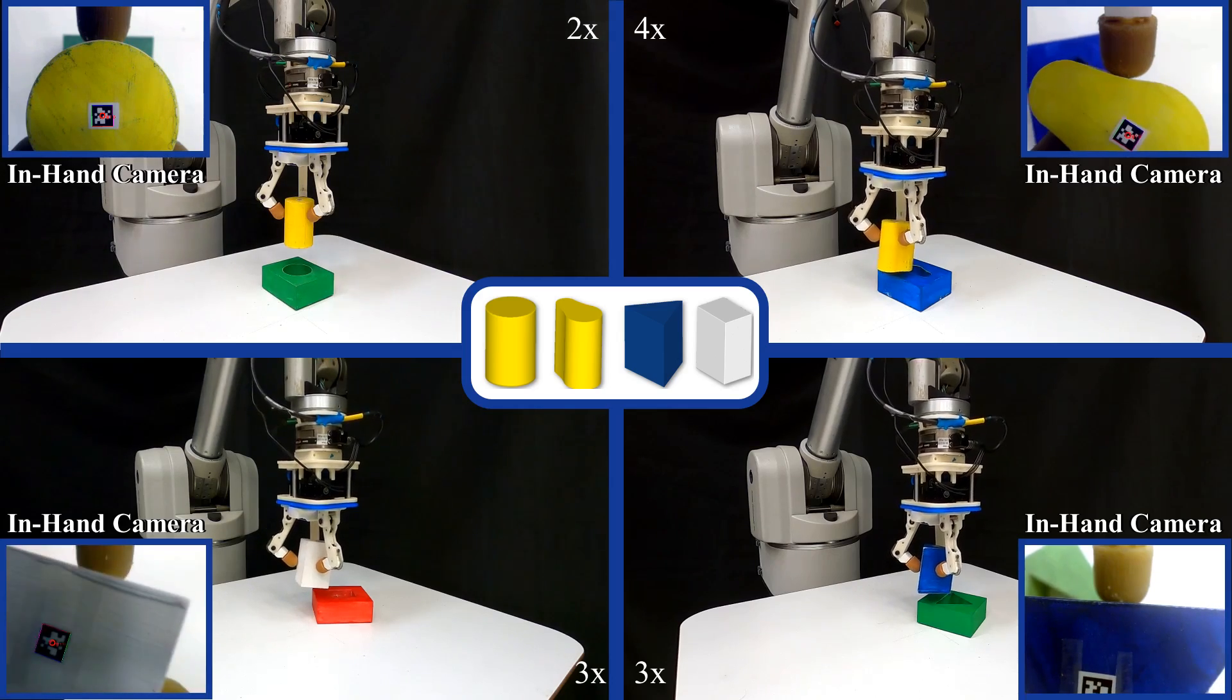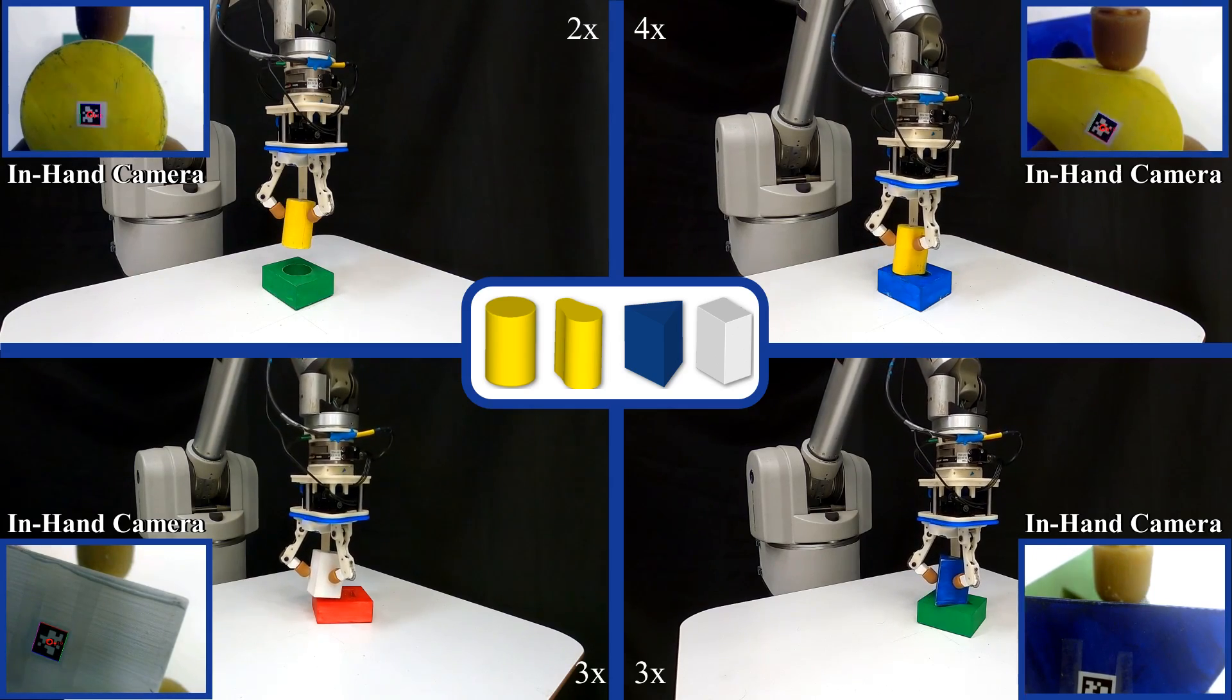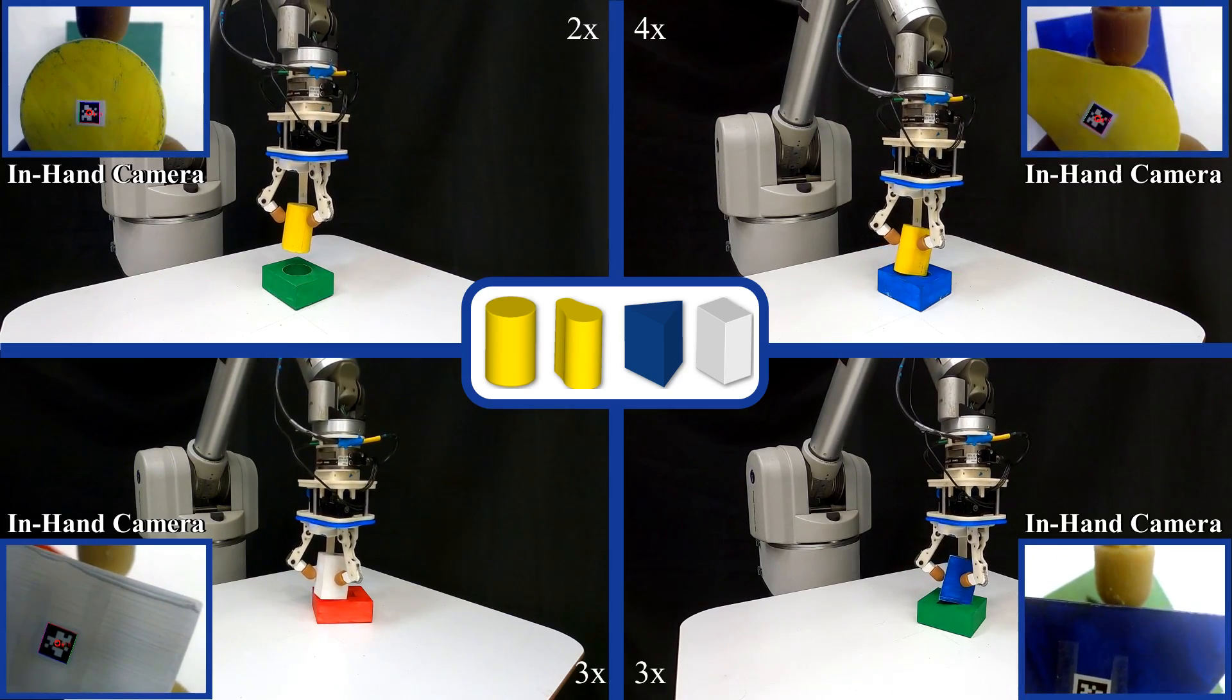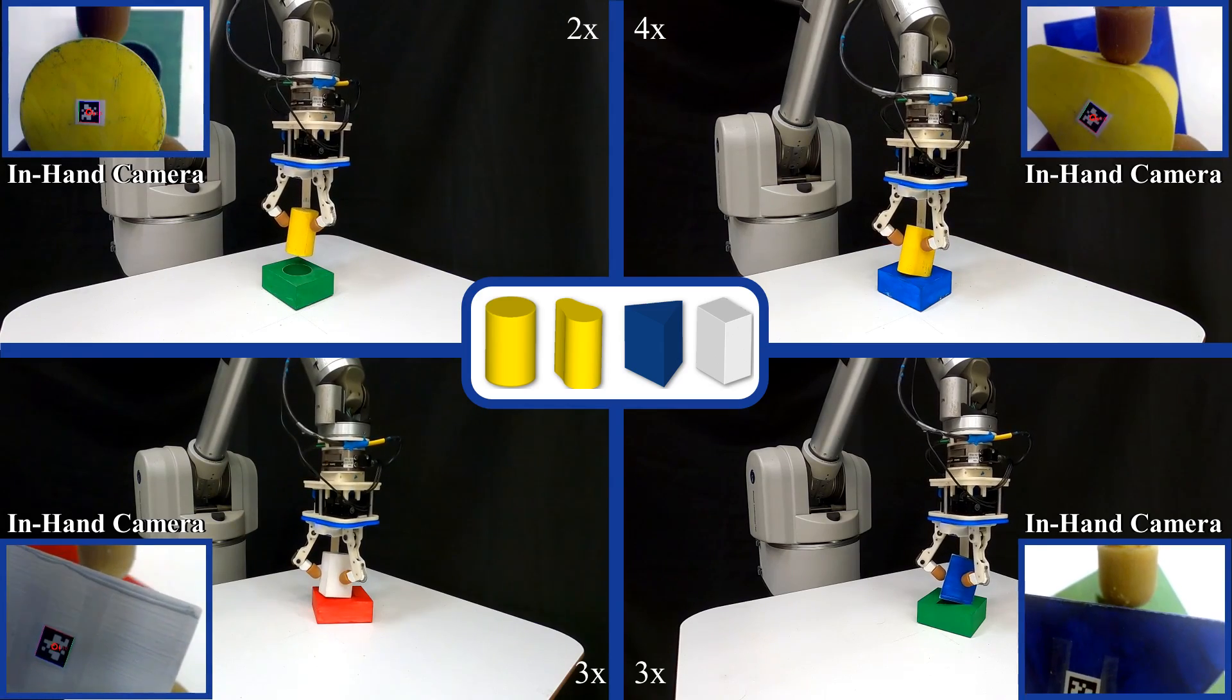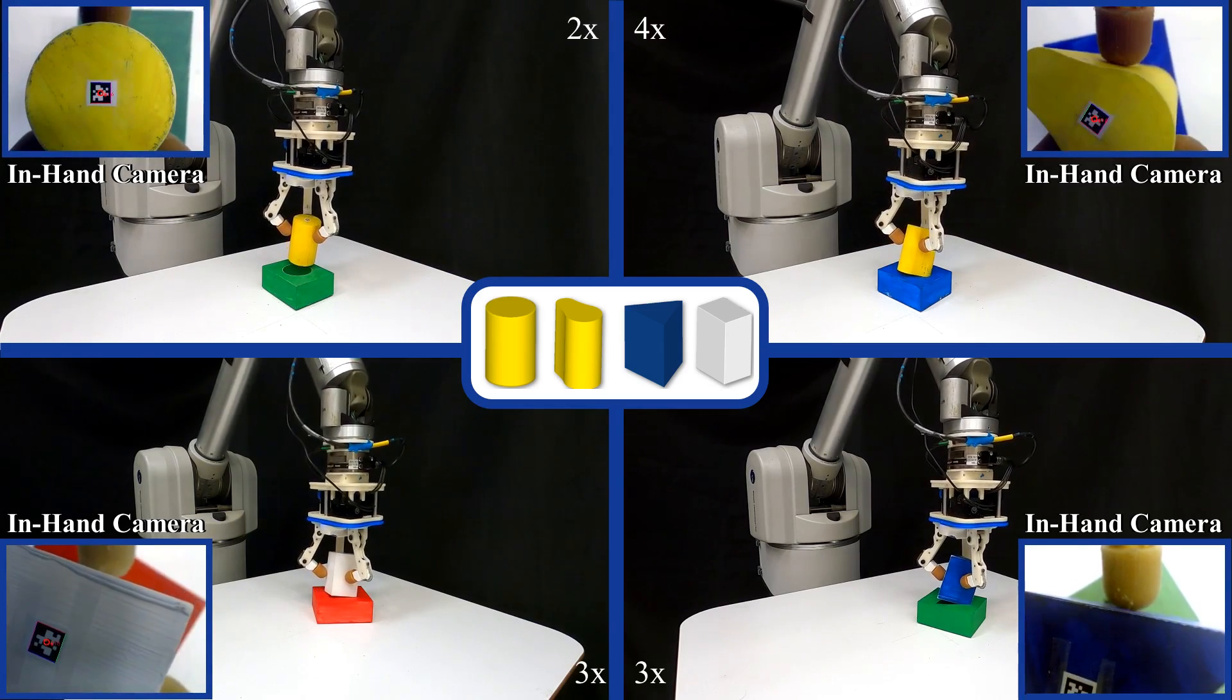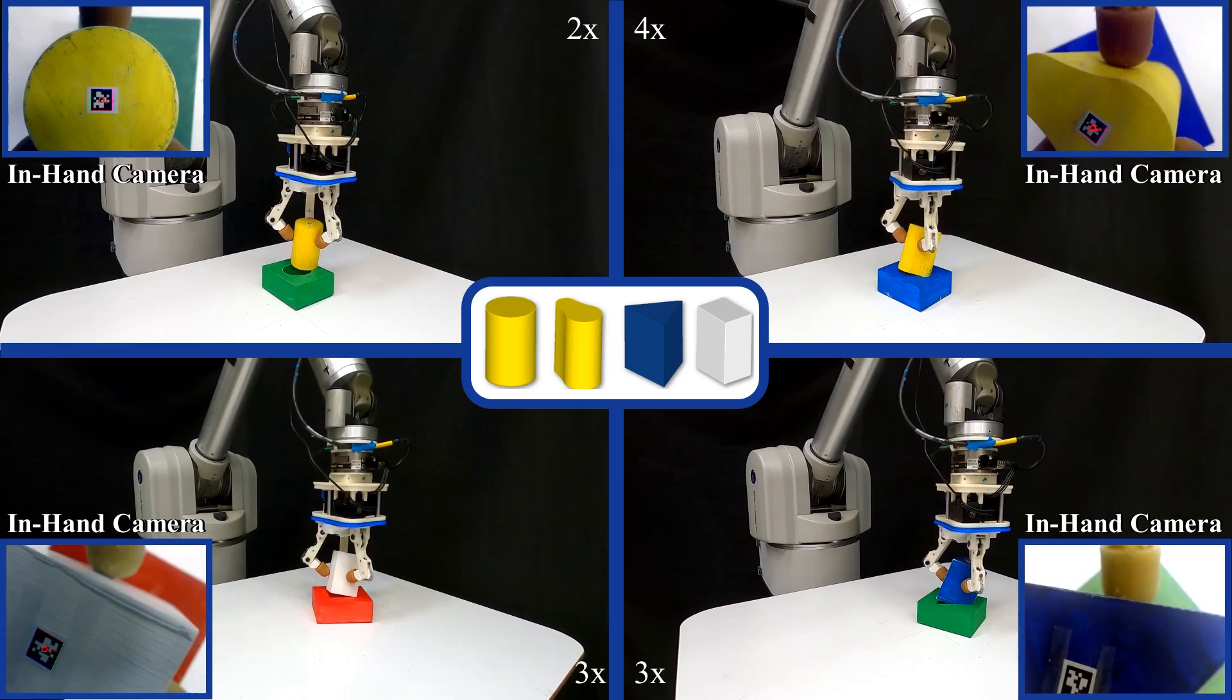We showcase our method on four total objects of less than 0.25 mm of hole tolerance: a cylinder, a pear-shaped prism, a triangular prism, and a rectangular prism. Note the similarities of the insertion process for all four objects.